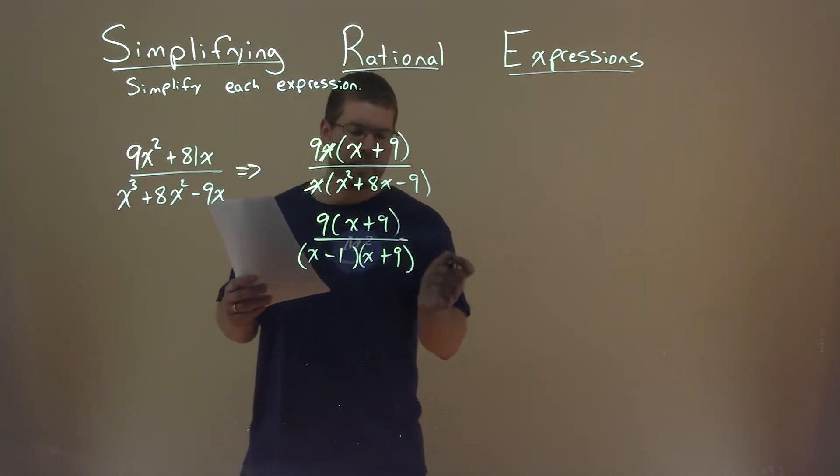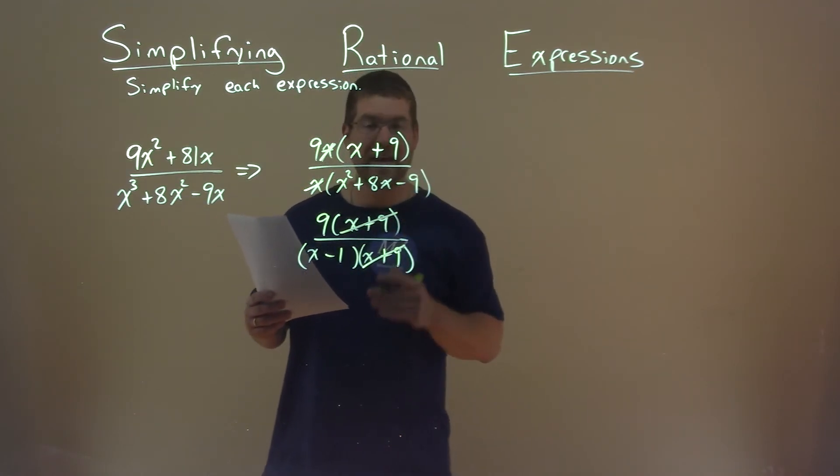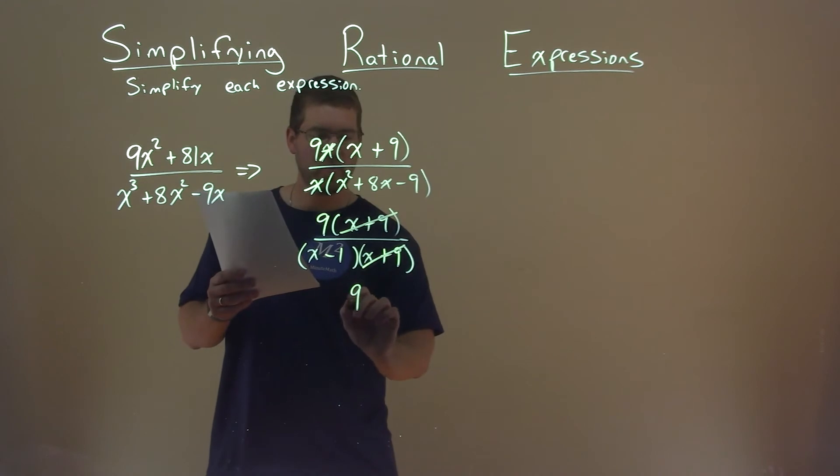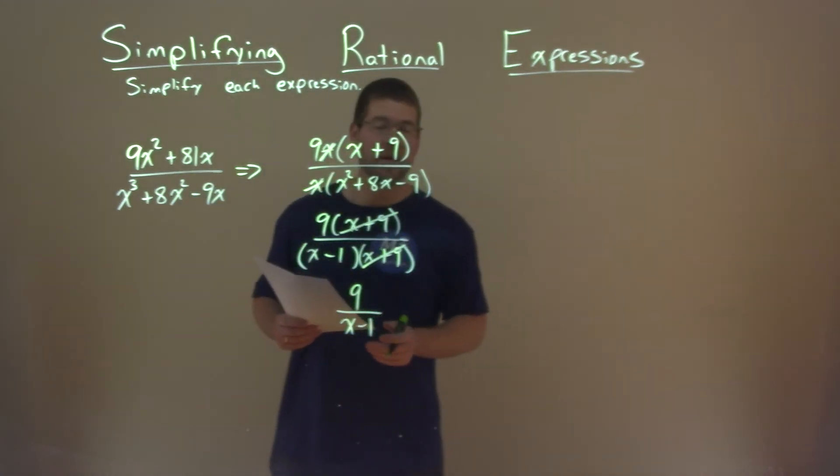And this is the beauty of factoring. x plus 9's here now cancel each other out, leaving us with a 9 in the numerator over the denominator, which is x minus 1, and that is our final answer.